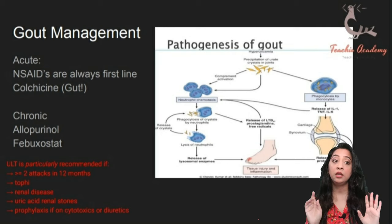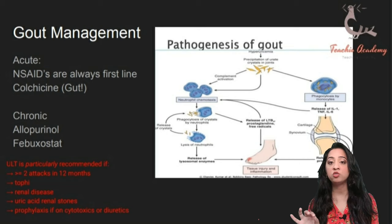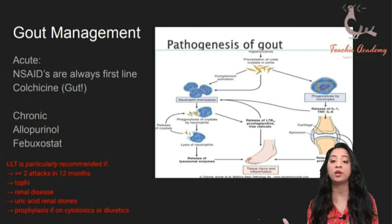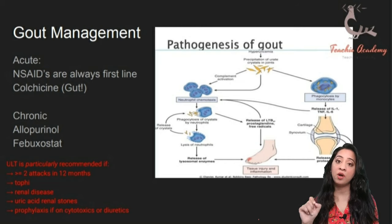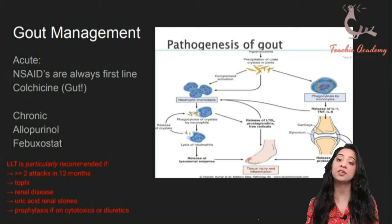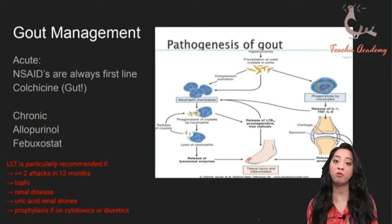One important PLAB 1 exam point: if a patient is already on allopurinol and has an acute attack of gout, you do not stop the allopurinol. Conversely, if someone has an acute attack of gout, you do not immediately start them on allopurinol — you give a period of gap first.